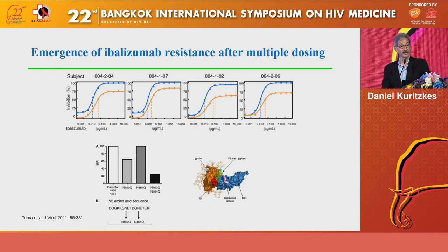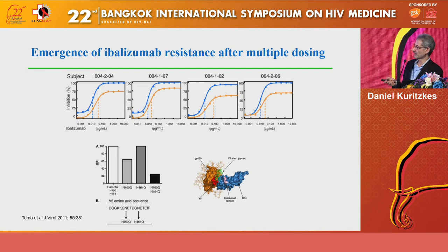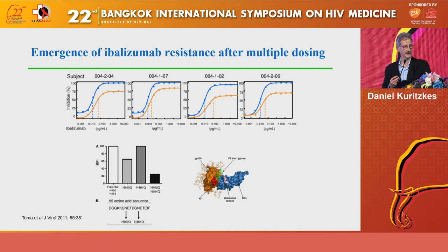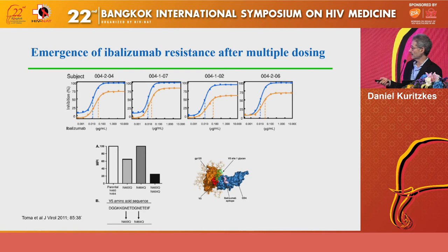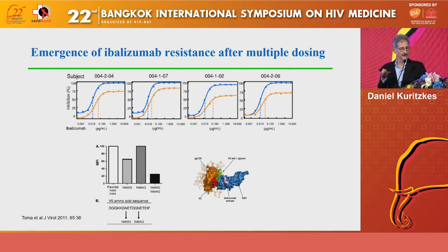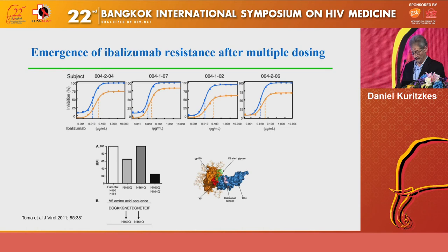Resistance does emerge to ibalizumab. Data from Toma and colleagues at Virologic using Phase 1B trial samples show an odd change in the shape of the inhibition curve — not a shift to the right of the IC50, but a flattening, which is classic for non-competitive inhibitors, as seen with resistance to the CCR5 antagonist maraviroc. Interestingly, the resistance mutations occur at the interface where the virus interacts with CD4, not where the antibody binds.